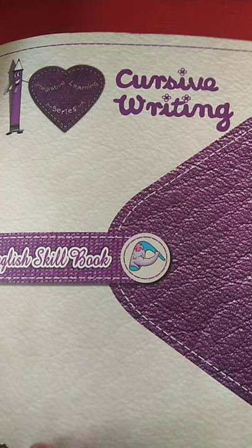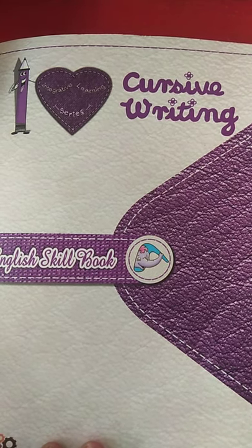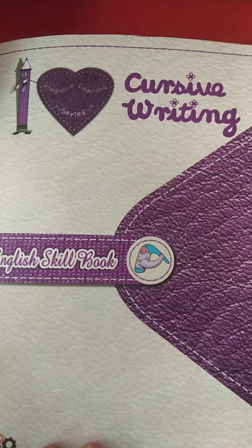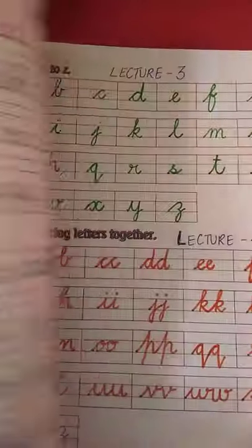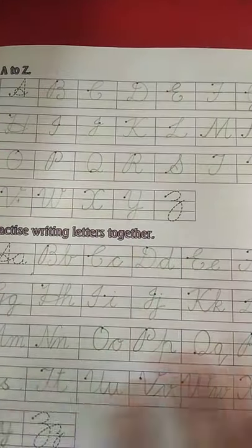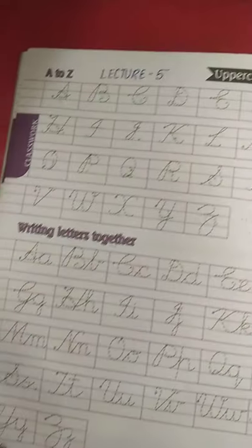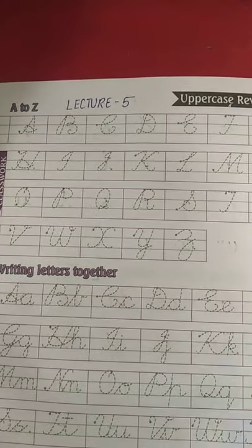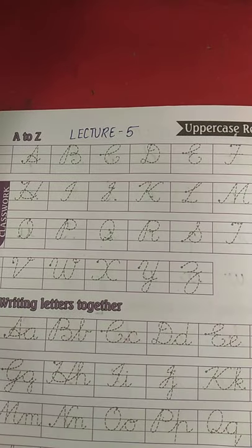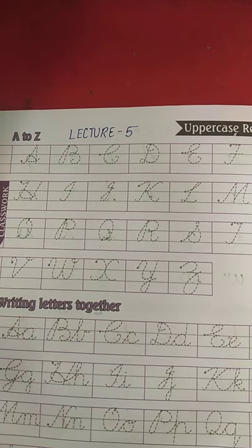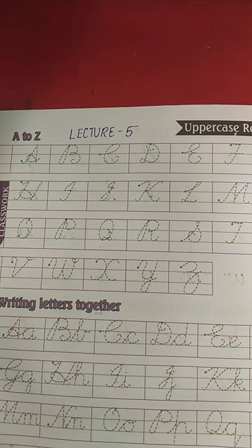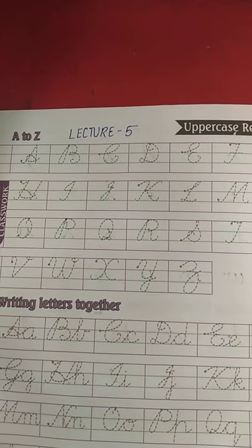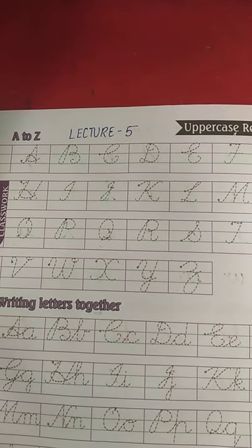Take out your books of I Love Cursive Writing and open page number 8. On page number 8, you see uppercase letters. Today we will learn how to write uppercase letters in cursive writing. Aaj hum wo sikhenge.